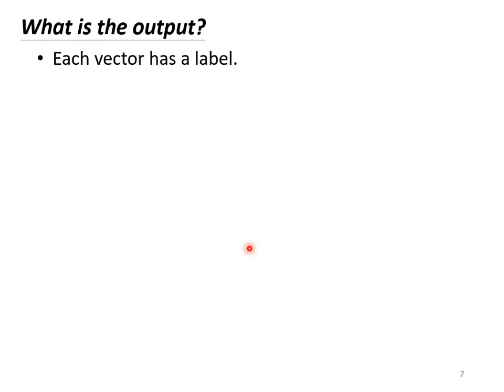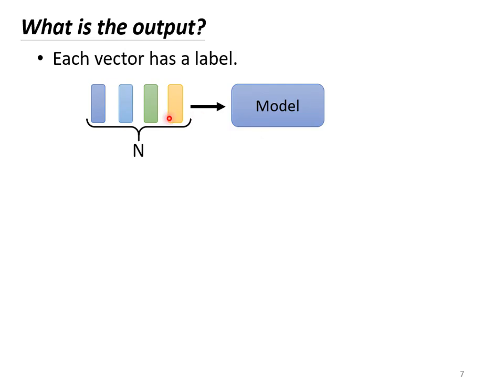Now, what is the output of our model? We have explained that the inputs are a bunch of vectors — texts, audio signals, or graphs. There are three possibilities for output. The first possibility is that each vector has a corresponding label: when your model takes four vectors as input, it outputs four labels. Each label could be a numeric value (a regression problem) or represent a class (a classification problem). In the first possibility, the input and output have the same length — if we take four vectors as input, we output four vectors; if five, we output five.